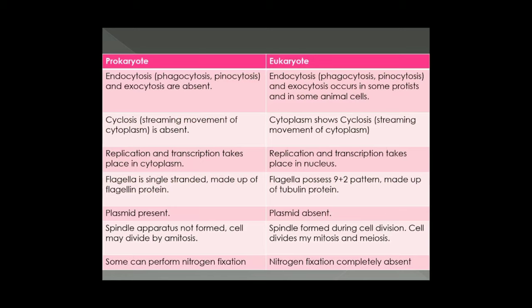The last point: some prokaryotic cells can perform nitrogen fixation. Rhizobium is a bacterium — a prokaryotic cell — that can fix nitrogen. Rhizobium is present in root nodules of leguminous plants. Leguminous plants cannot fix nitrogen themselves, but they absorb nitrogen from prokaryotic cells like Rhizobium. Nitrogen fixation is completely absent in eukaryotic cells. So these were some major differences between prokaryotic and eukaryotic cells. In the next video, we will deal with the structure of a eukaryotic cell, and we can add more differences by comparing their organization. Thank you.